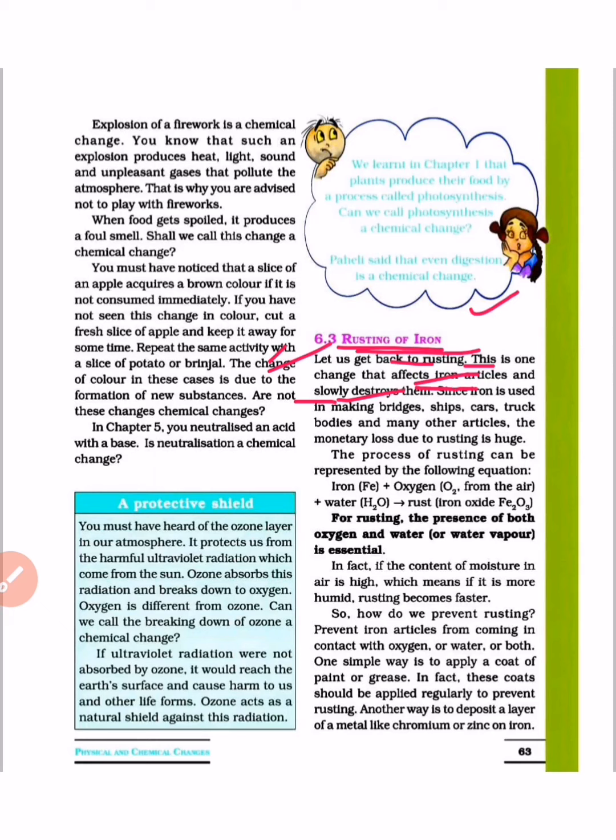The rusting affects iron articles and slowly destroys them. Since iron is used in making bridges, ships, trucks, the bodies of many other articles, the monetary loss due to rusting is huge. What is the reason for this?